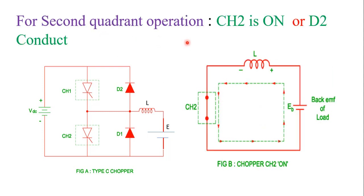For second quadrant operation, CH2 is turned on or D2 is conducting. When CH2 is turned on, the current flows through the battery at the load side. The inductor charges with polarity positive and negative. The direction of current is reverse in this case.